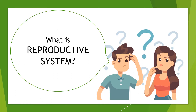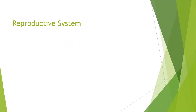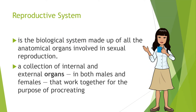Now that we are done with our pre-assessment, what is a reproductive system? The reproductive system is the biological system made up of all the anatomical organs involved in sexual reproduction, according to Wikipedia. It is also a collection of internal and external organs in both males and females that work together for the purpose of procreating.